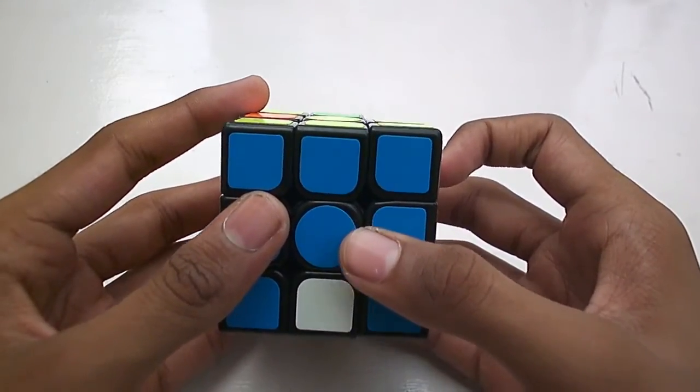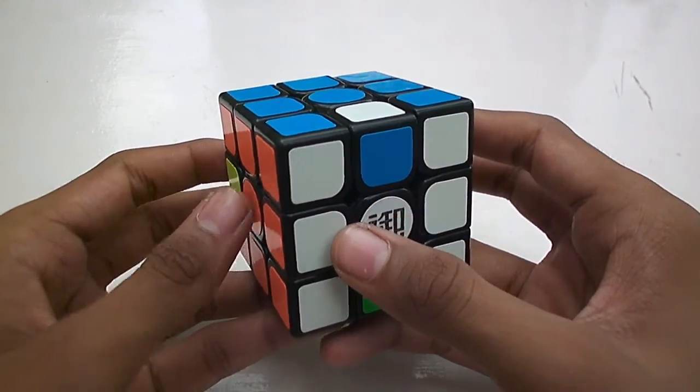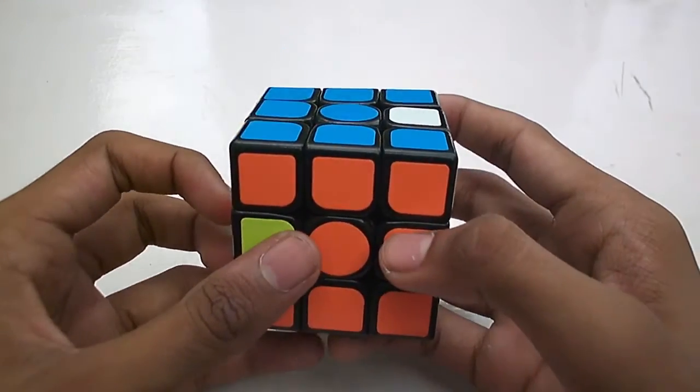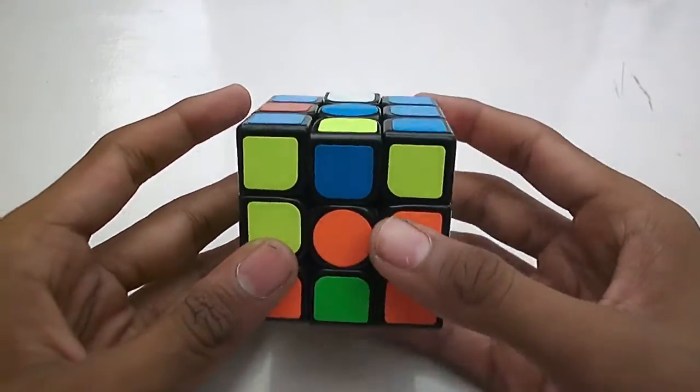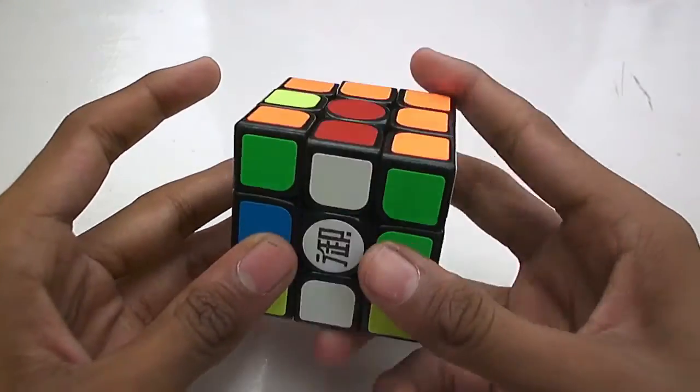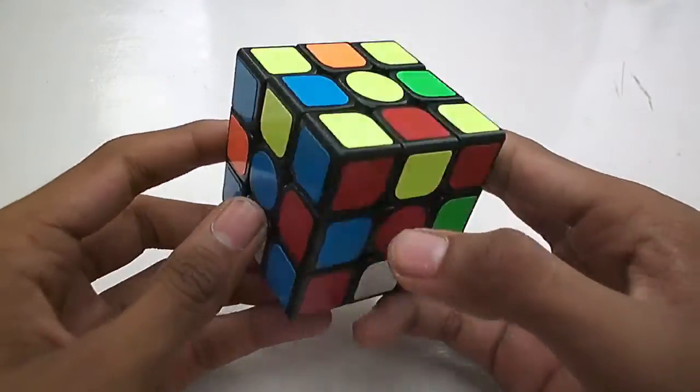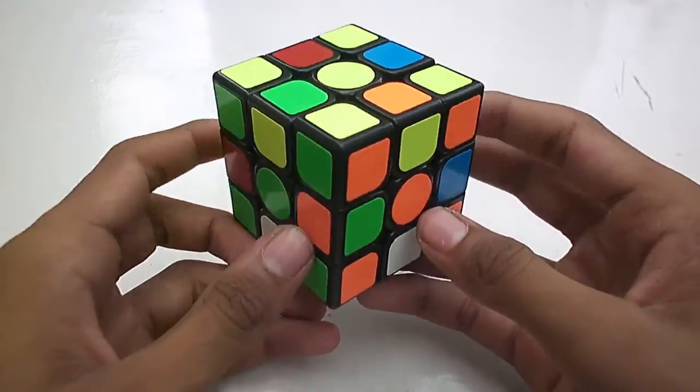Then what you do is just put the front face on the top and the left face on the front and now do it again. Now repeat the whole series one more time and as you can see here is our super flip pattern.